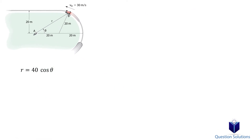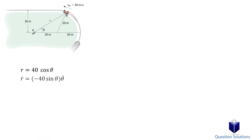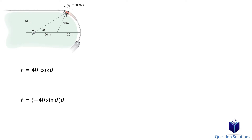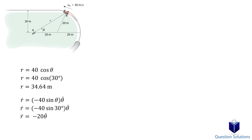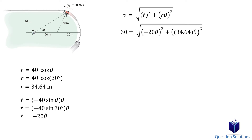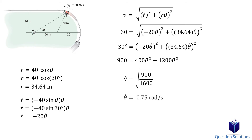Now we take the first time derivative of our equation. We need to calculate the angular velocity when theta is equal to 30 degrees, so we substitute that value into our equations. To find the angular velocity, we write an equation for the magnitude of velocity. The magnitude of velocity is given in the question as 30 meters per second. Plugging that in along with the other values we found, we square both sides, and solving for the angular velocity gives us our answer.